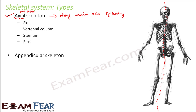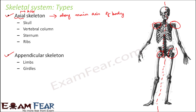Appendicular skeleton refers to bones not located along the body's main axis — for example, the limbs. If you look at the hands or the legs, they are not located along the main axis, but they are equally important. So all the limbs and the girdles form the appendicular skeleton. Girdles are those parts which connect the limbs to the axial skeleton, so they help connect the entire skeletal system together.